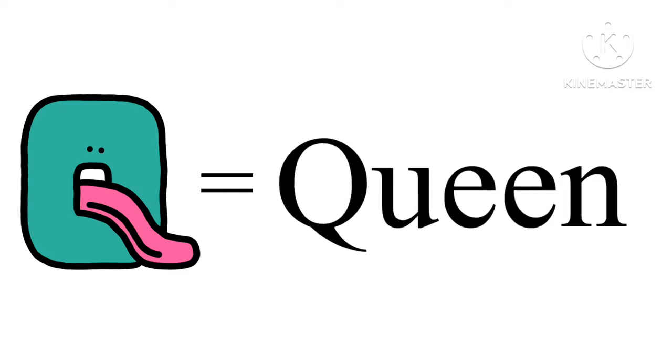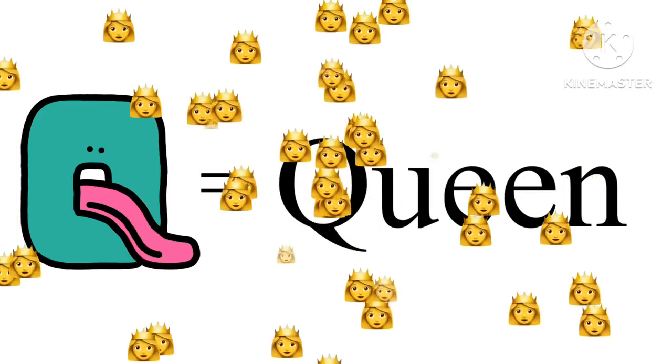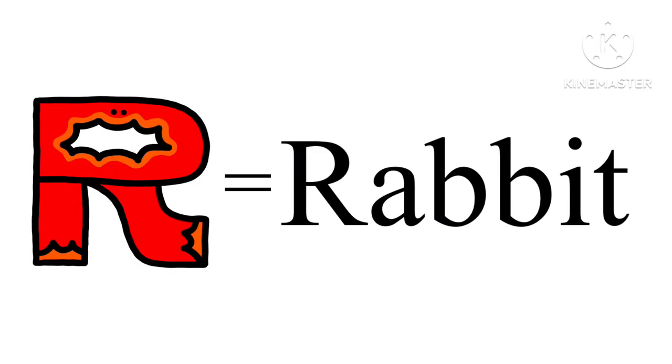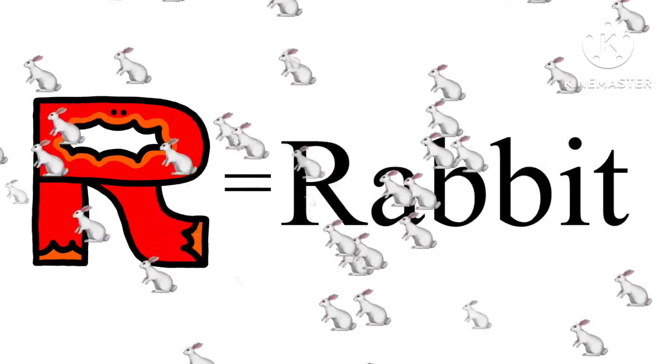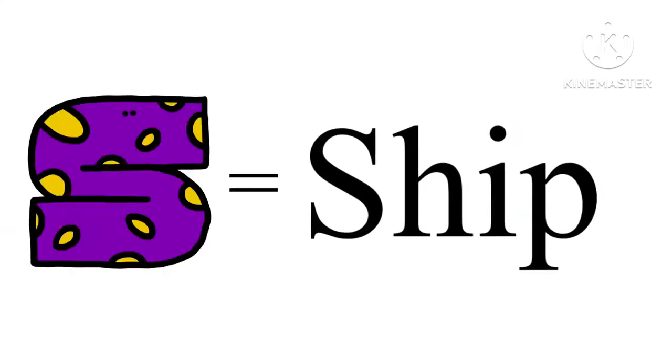Q is for Queen. R is for Rabbit. S is for Ship.